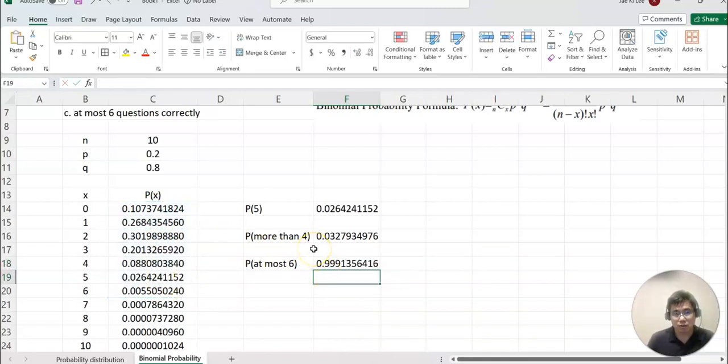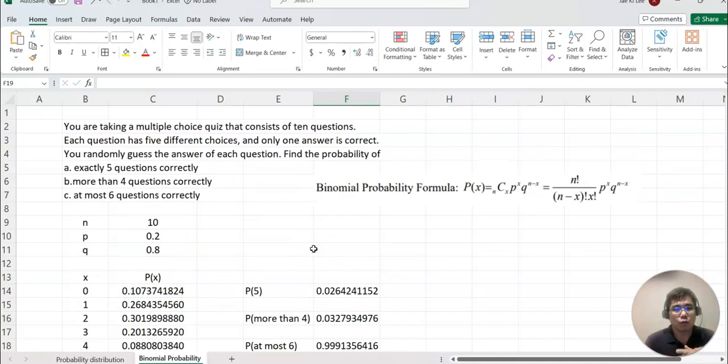This time we are discussing the questions where the percentage value is not given but we can find it. The following example will be maybe the probability is given. I'm going to see you again with that kind of example. All right, thank you, bye.